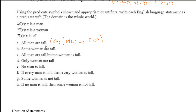The next example is 'Some women are tall.' 'Some' means there exists. Remember, 'there exists' almost always goes with 'and.' So: there exists an x such that x is a woman and it is tall — written as ∃x(W(x) ∧ T(x)).